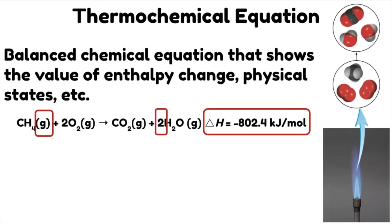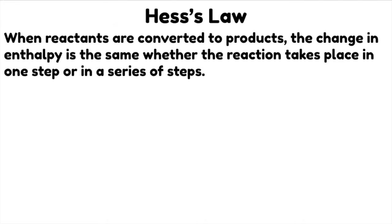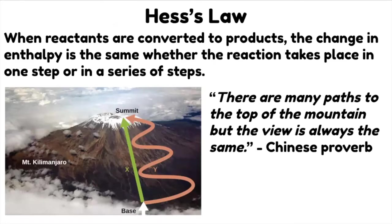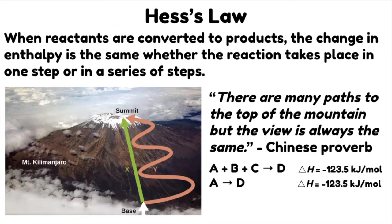There are two ways to calculate the value of enthalpy: first, by utilizing Hess's law, and second, by using the standard heats of formation. Hess's law states that when reactants are converted to products, the change in enthalpy is the same whether the reaction takes place in one step or in a series of steps. There are many paths to the top of the mountain, but the view is always the same — the path is not important; what matters is the start and the finish. Regardless of the number of steps to reach product D, the enthalpy is still the same as the direct one-step conversion of reactant A to product D.